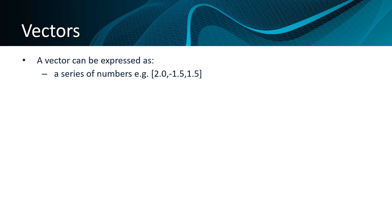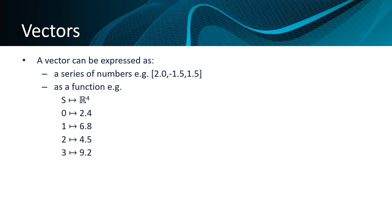A vector can also be expressed as a function. The notation below shows us that we have a vector s which is a 4-vector over R. Position 0 in the vector maps to 2.4, position 1 maps to 6.8, position 2 maps to 4.5, and position 3 maps to 9.2.